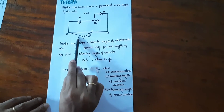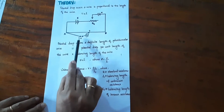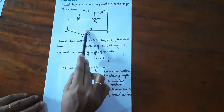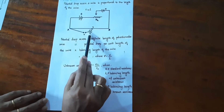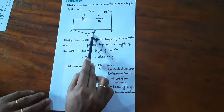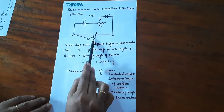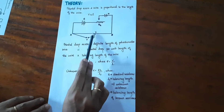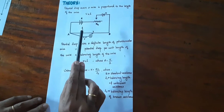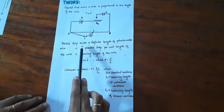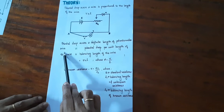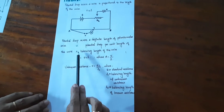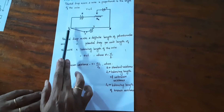Now if we want to measure an unknown voltage V using this potentiometer arrangement, what we have to do is adjust this jockey point J so that we get null deflection in the galvanometer. Under this condition, we can say that this unknown voltage V is proportional to the length AJ, the balancing length. So the potential drop across a definite length of the potentiometer wire equals the potential drop per unit length of the wire multiplied by the balancing length AJ.